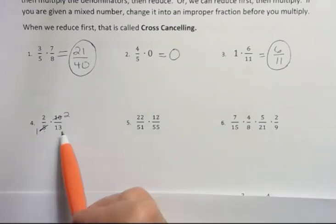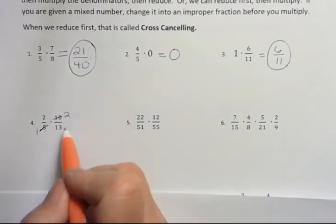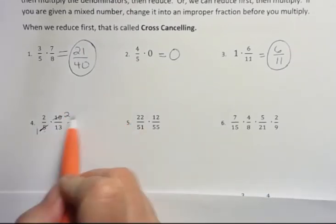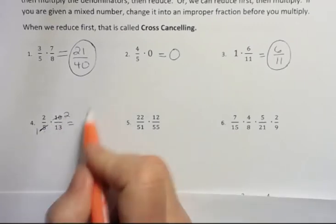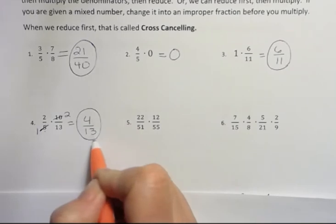Is there anything else we can cancel? There's no common factors between 2 and 13 besides 1, which doesn't help. 2 and 13 are both prime numbers. So now I multiply across the top, 2 times 2, and get 4. And across the bottom, 1 times 13, and I get 13.